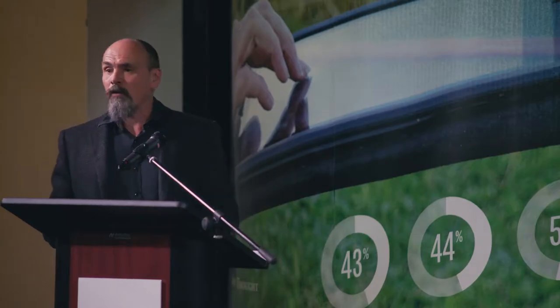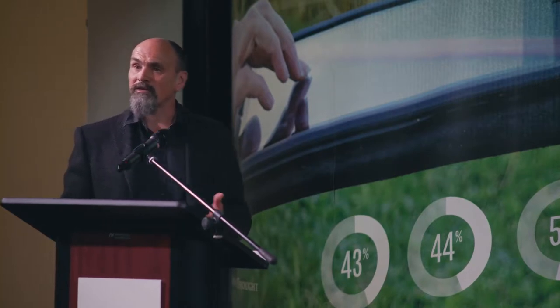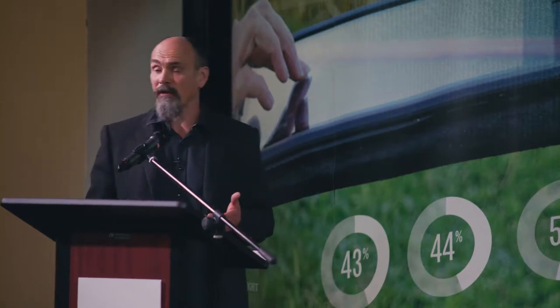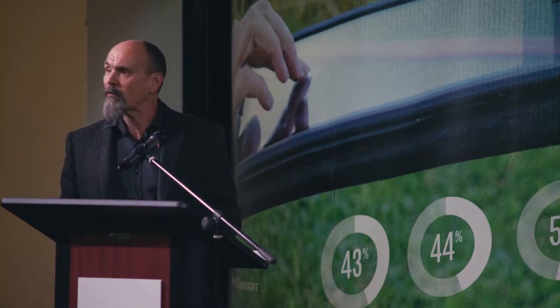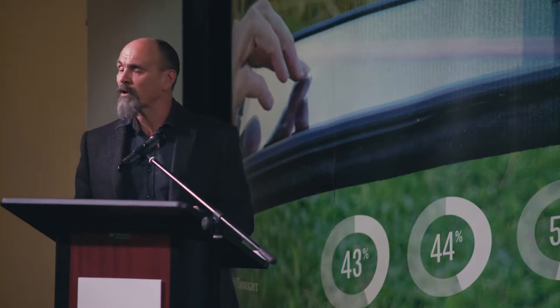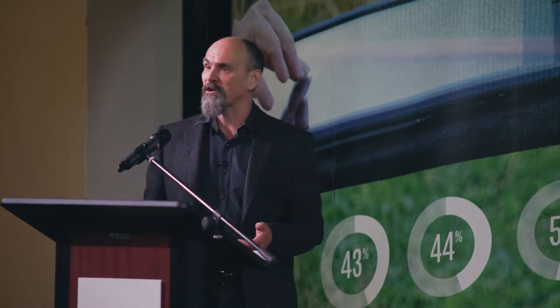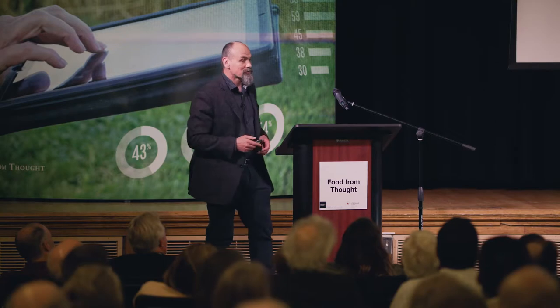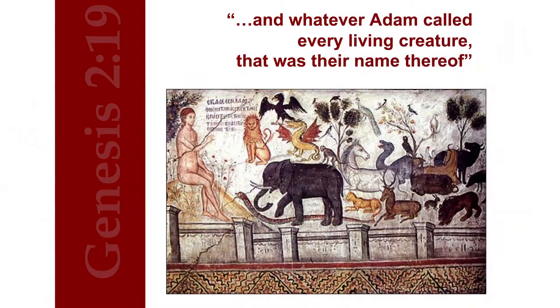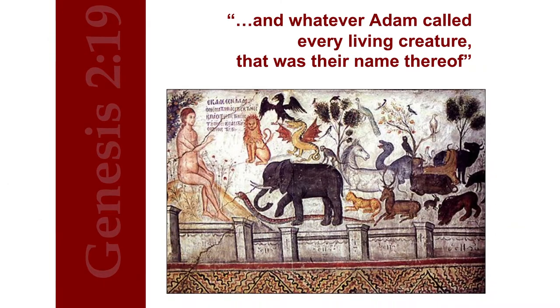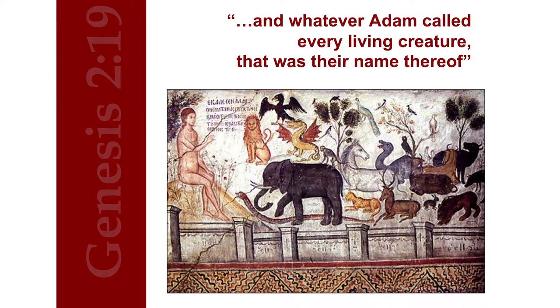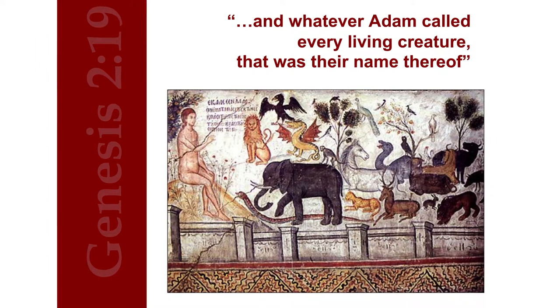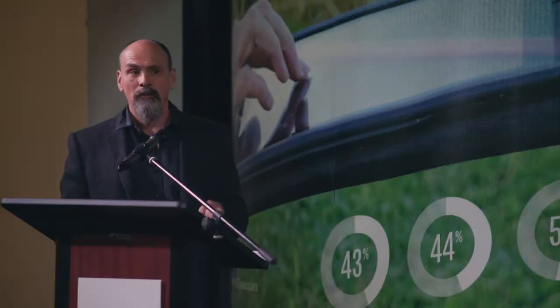Before we talk about how we use biodiversity genomics to study our food supply and its authenticity, we have to step back and talk a bit about the world's oldest profession, which is, of course, taxonomy, as depicted in this 13th-century Italian fresco. As long as humans have had language, we've been naming the species around us, typically as edible or medicinal or possibly poisonous.